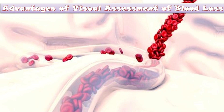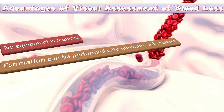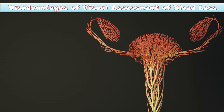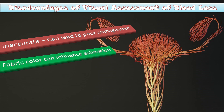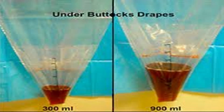The advantages of visual assessment of blood loss include: no equipment is required, estimation can be performed with minimum skill, regular training can improve estimation accuracy, and it is a cost-effective process. The disadvantages include poor accuracy, which can lead to poor management, fabric color can influence estimation, and there are person-to-person variations in estimation.